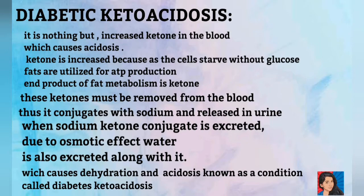In diabetes mellitus, we can develop ketosis. When ketone levels rise, ketones are acidic. In the body, ketones are excreted along with sodium — forming sodium ketoacid salts — and excreted in urine. Since sodium is lost in urine, water follows, causing dehydration. This dehydration and acidosis together is called diabetic ketoacidosis.